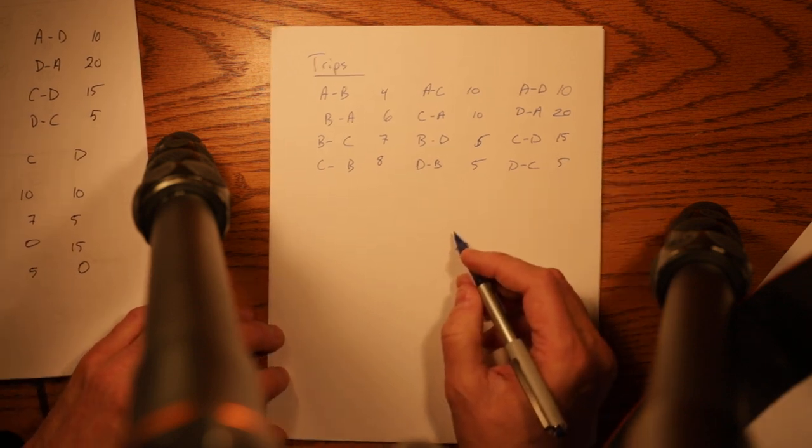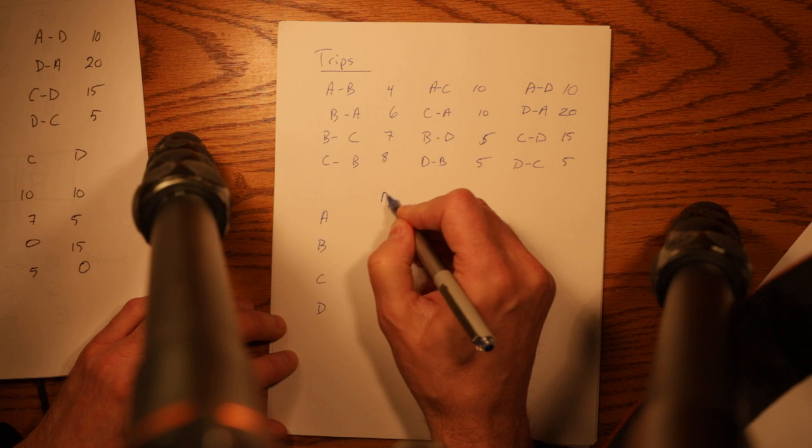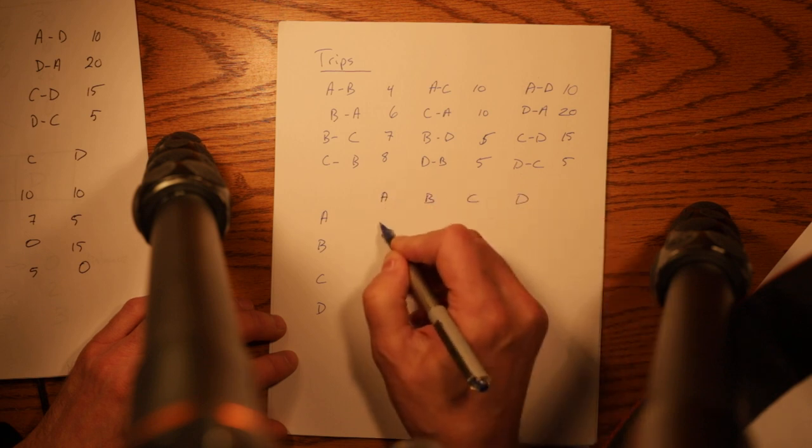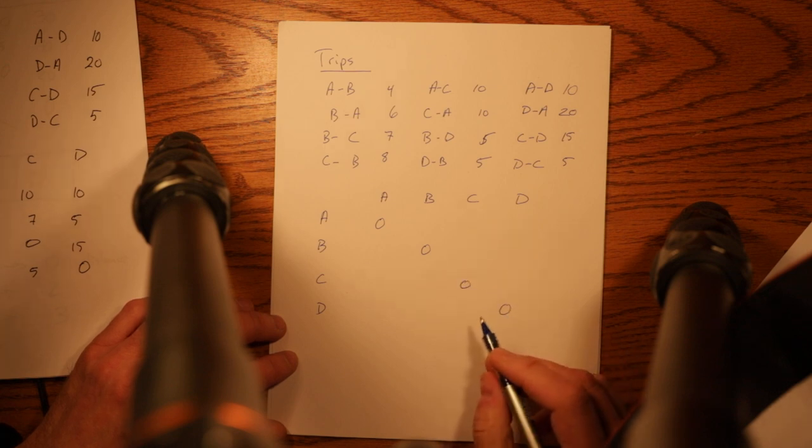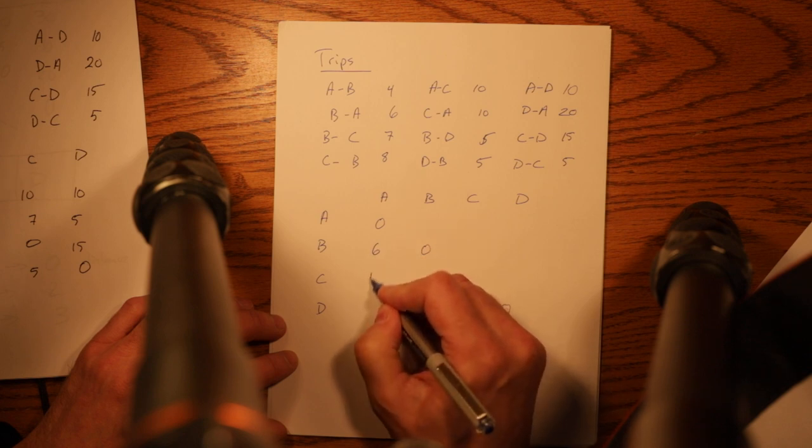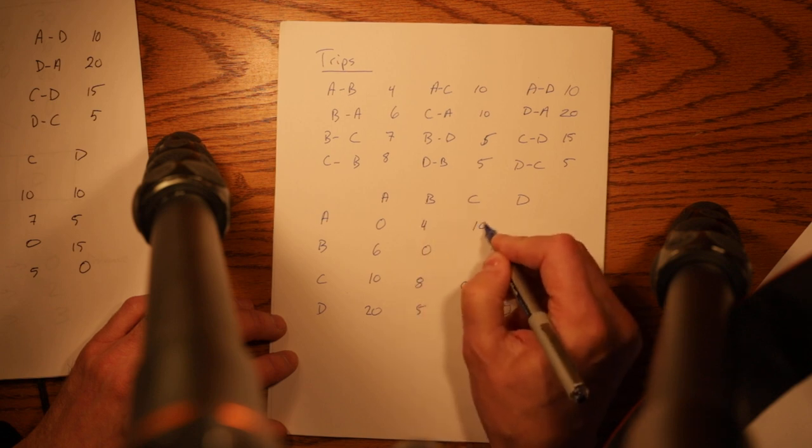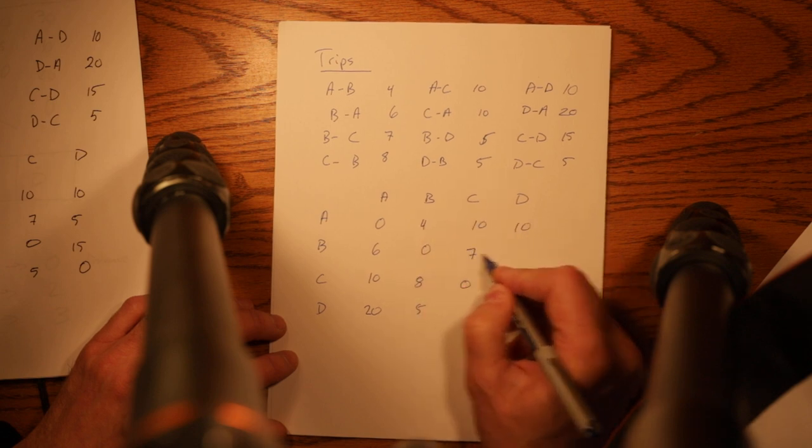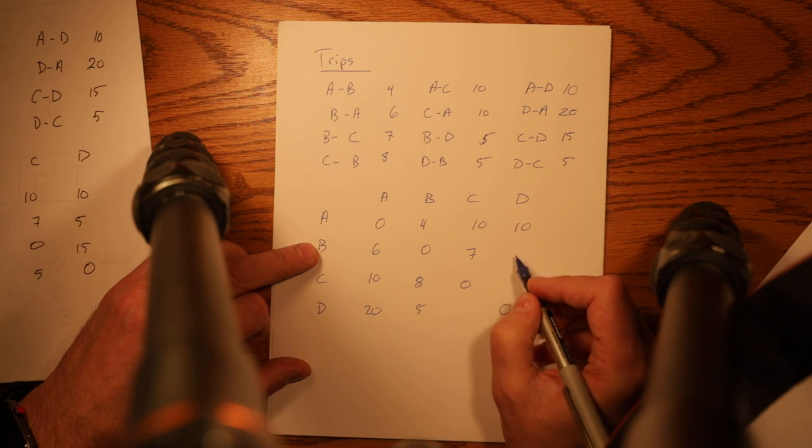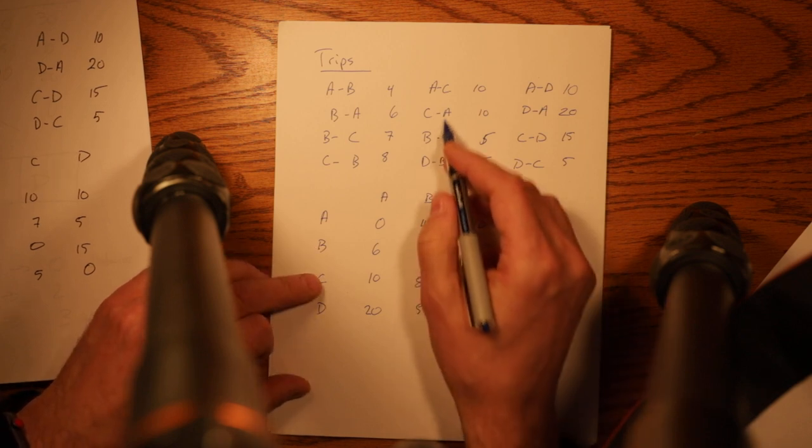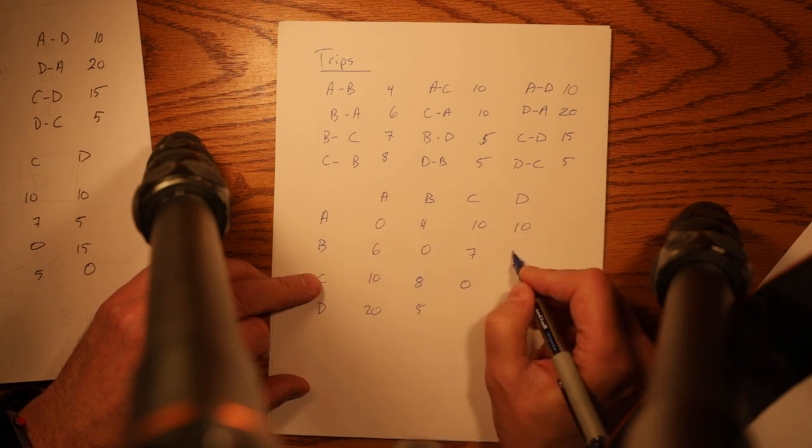And what you would normally do is put that information into a matrix: A, B, C, D and A, B, C, D. Clearly between A and A, B and B, C and C there are zeros, so the diagonals are zeros and then we're just going to fill it in from above. So all I am doing here is I'm taking the numbers from above, sort of B to C is 7, C to B is 8 and so I'm just filling in the matrix here.